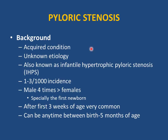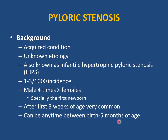Pyloric stenosis is an acquired (not congenital) condition also known as infantile hypertrophic pyloric stenosis. The etiology is unknown. Incidence is 1-3 per 1000, and it is 4-8 times more common in males, but can occur in females. It commonly presents in the first-born male but can also occur in subsequent children. The most common age of presentation is after the first three weeks of age; it can occur anytime between birth and five months.